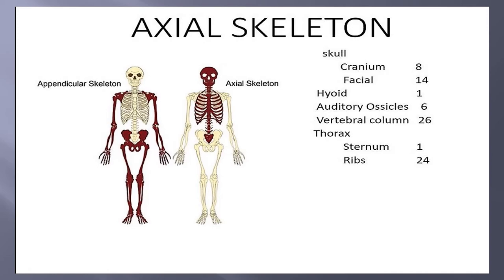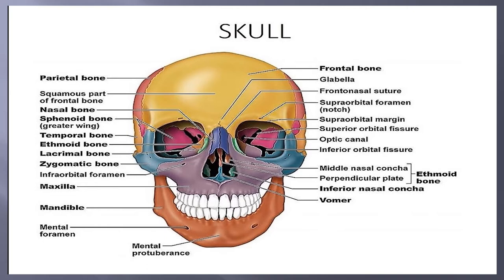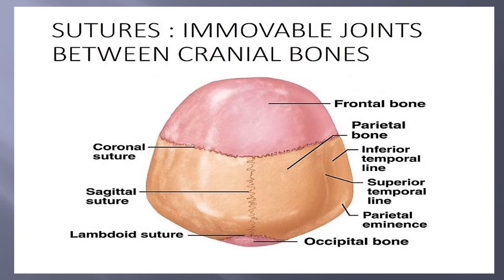We will move to the full view of the skull. You can see the frontal bone, parietal bone, sphenoid, nasal bone — the full cranium and the facial bones are labeled so you can see and study. We will move to sutures, which are immovable joints between cranial bones.